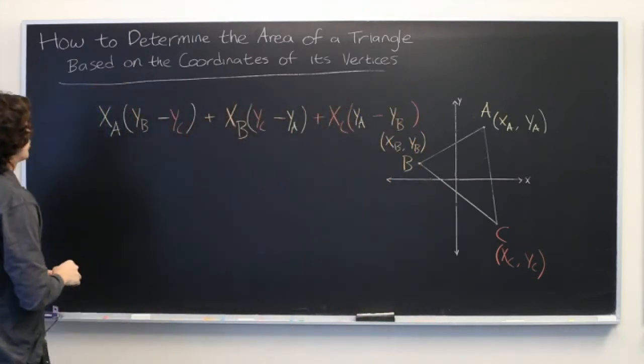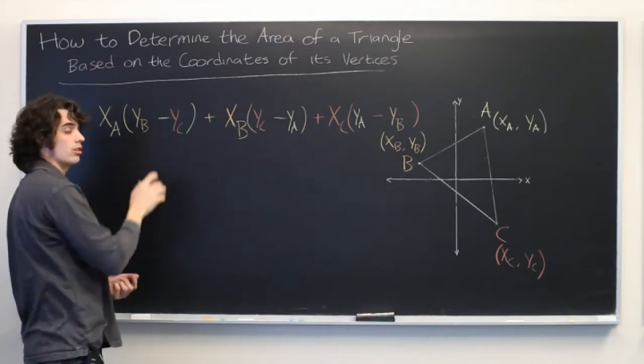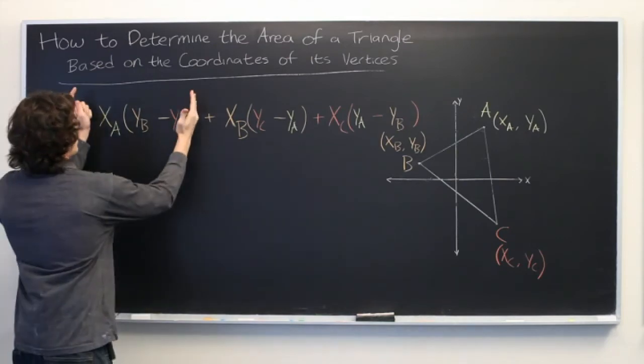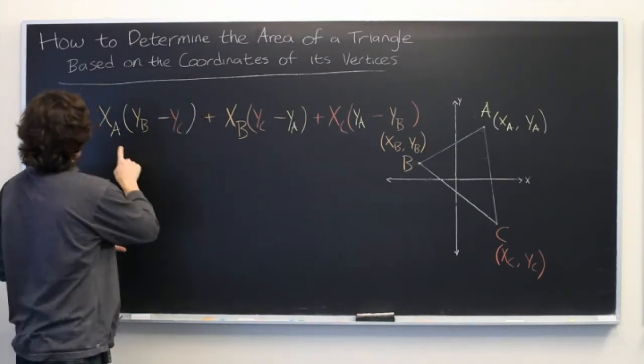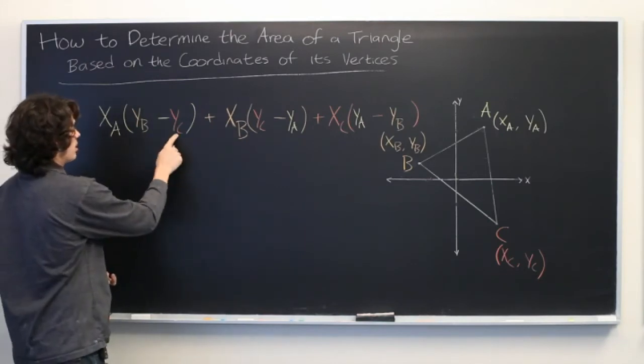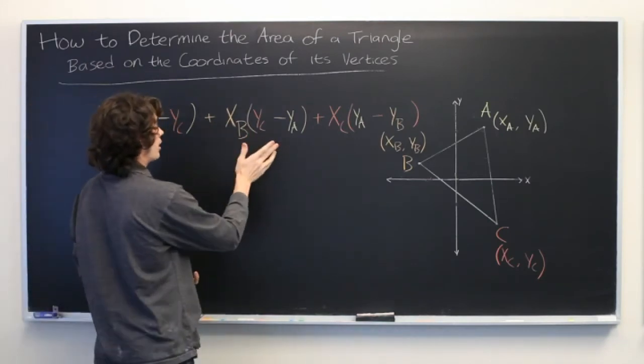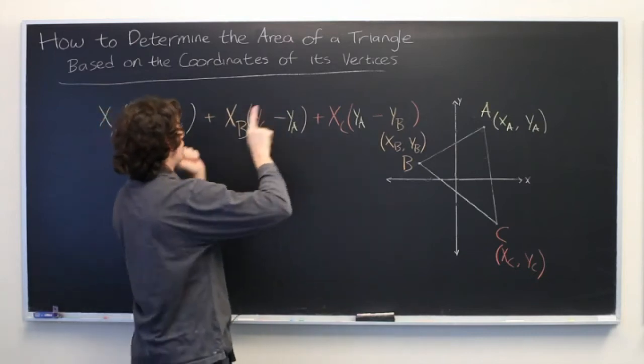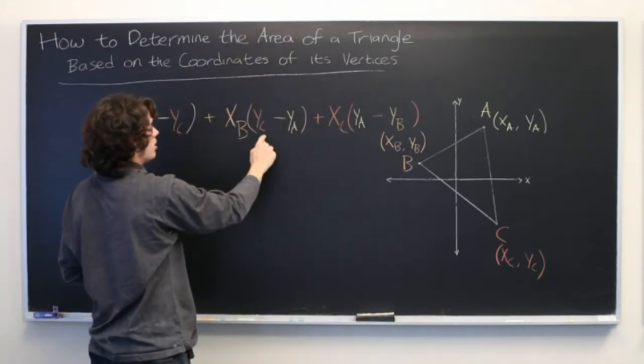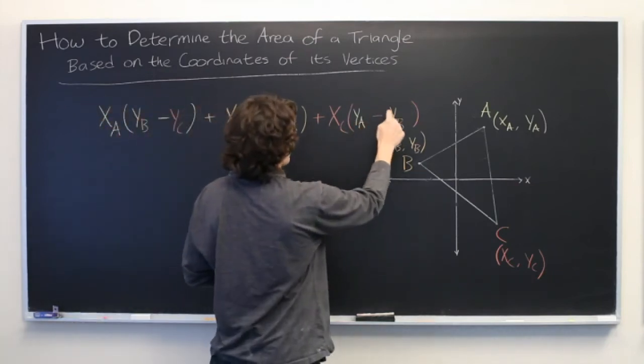Now, it may be somewhat confusing to remember which order these letters go in. But the easiest way to remember is when you look at any one chunk, A, B, and C should be in the right order: A, B, C. And here, it's shuffled around a little bit, but if we always read left to right, it'll be correct. A, B, C. Same thing here. A, B, C.